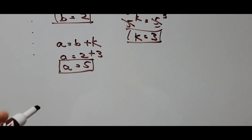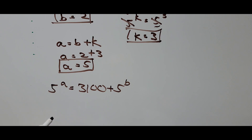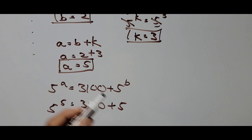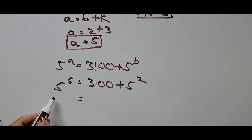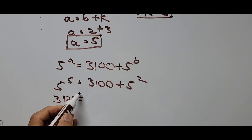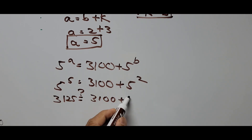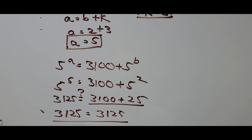The original equation is 5 raised to A equals 3100 plus 5 raised to B, where A equals 5 and B equals 2. So that's 5 raised to 5 equals 3100 plus 5 raised to 2. The fifth power of 5 is 3125, and 3100 plus 5 squared is 3100 plus 25, which equals 3125. So our answer is confirmed: A equals 5, B equals 2.